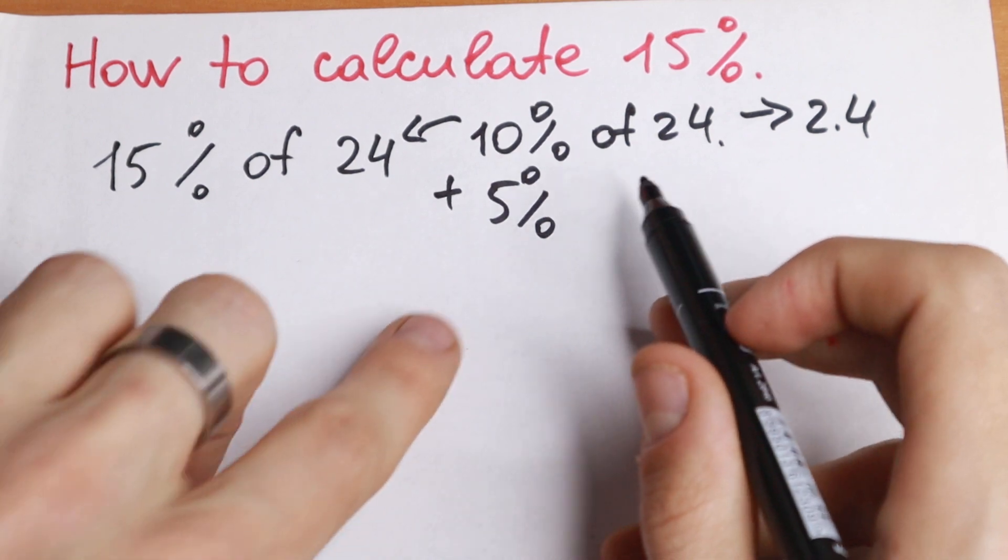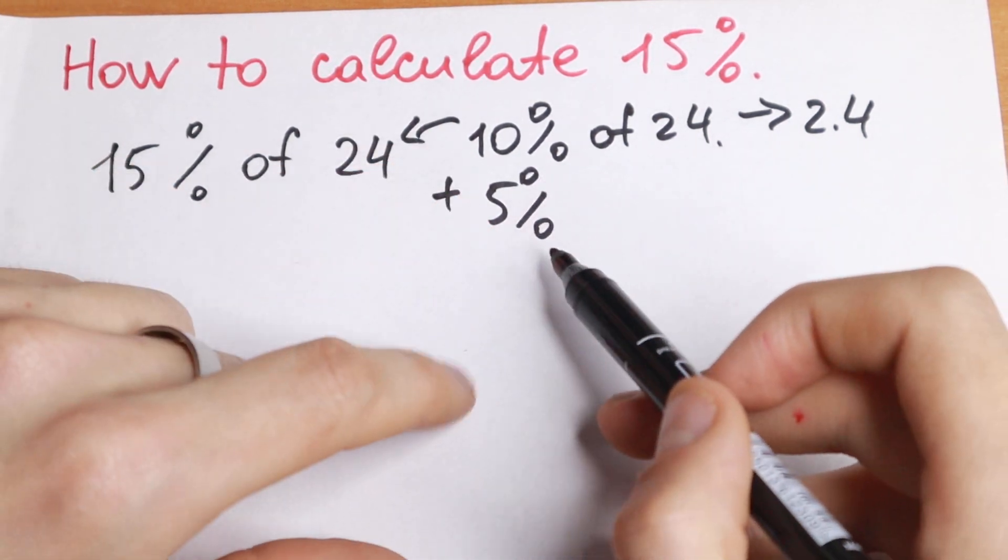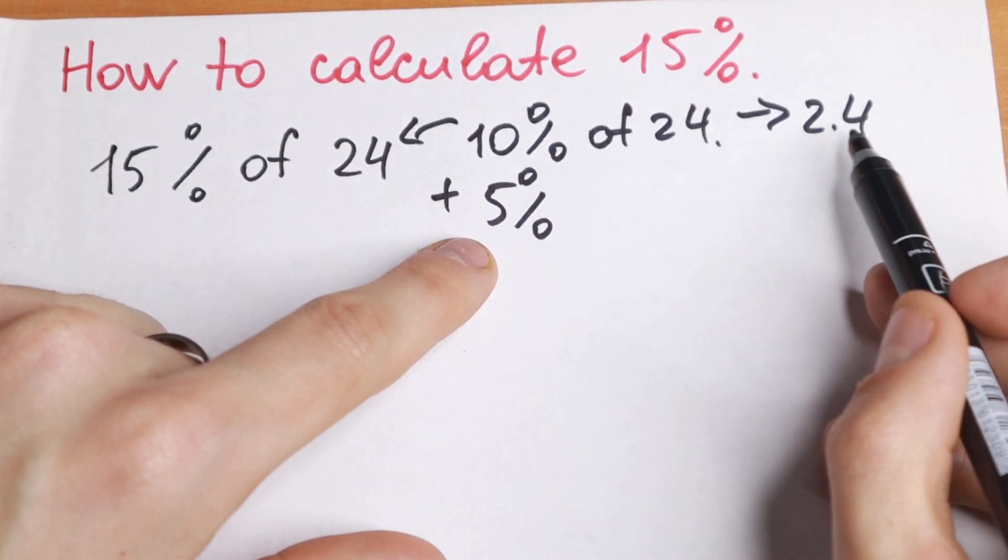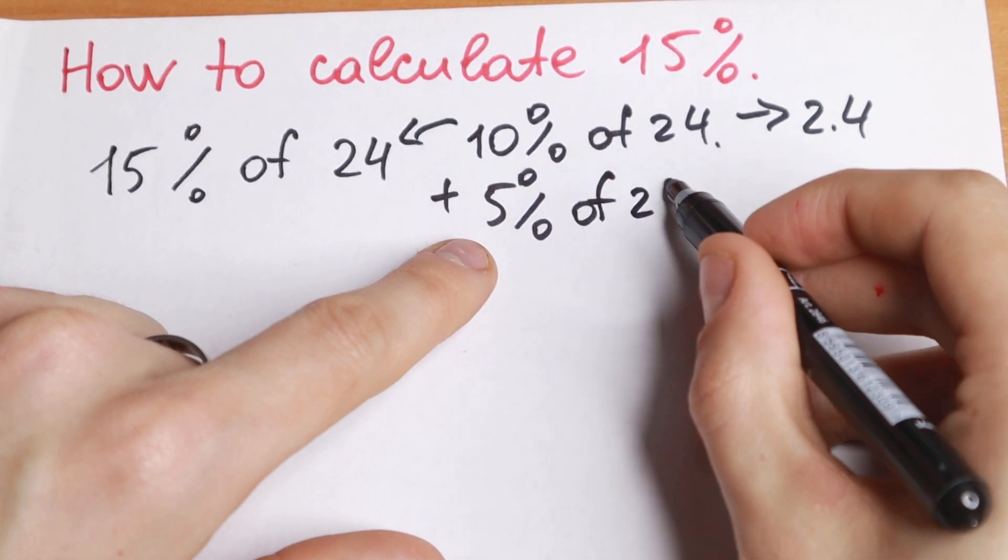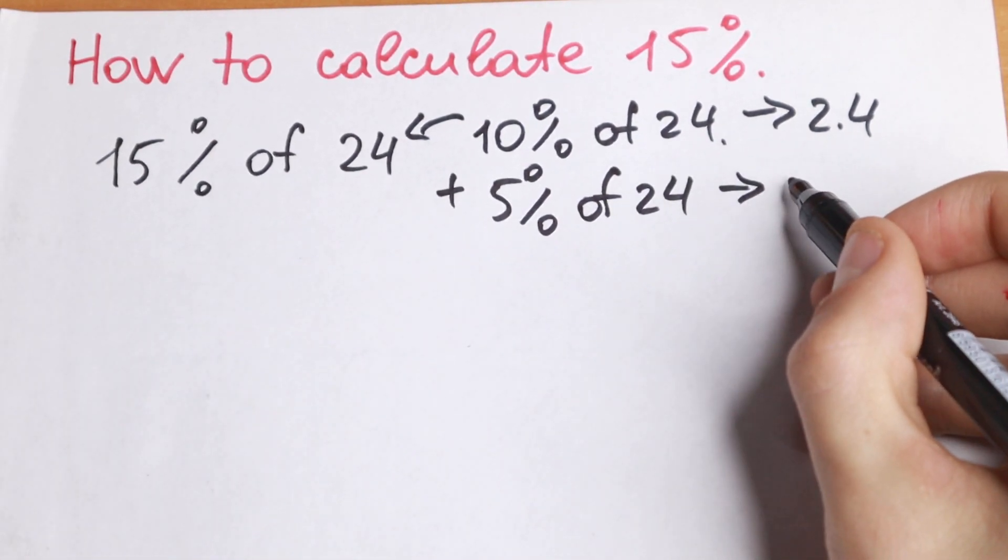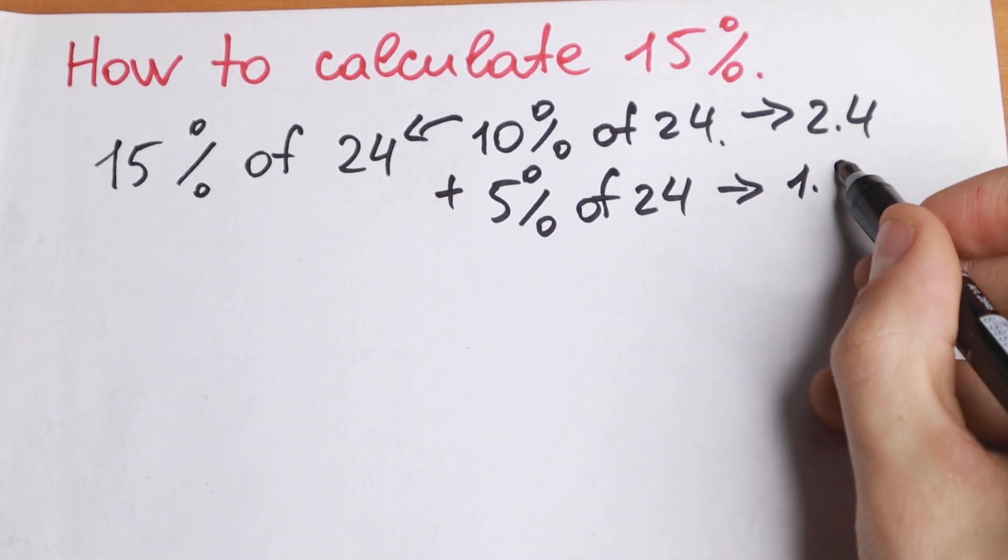And right here 5%, but 5% is the half of this 10%, so 5% is the half of this answer. So 5% of this 24, we will have 1.2.